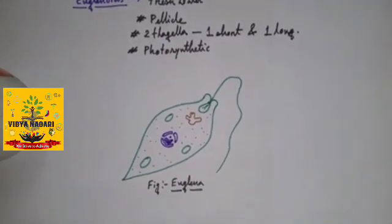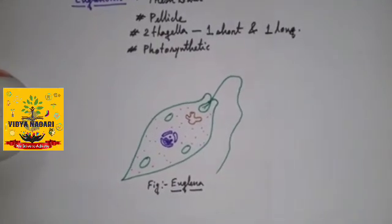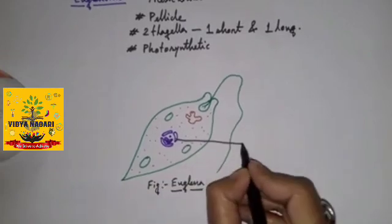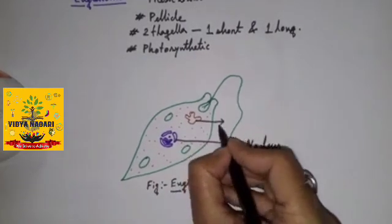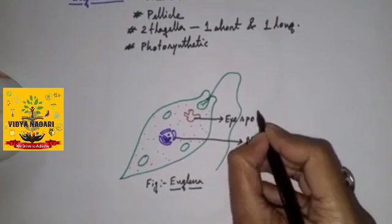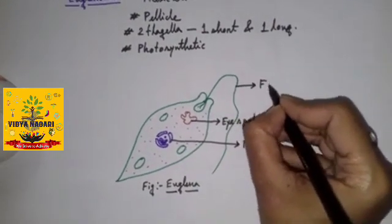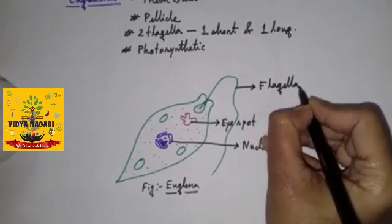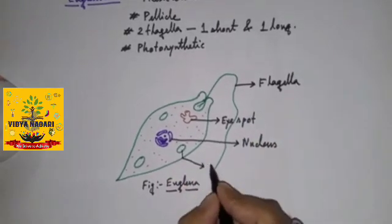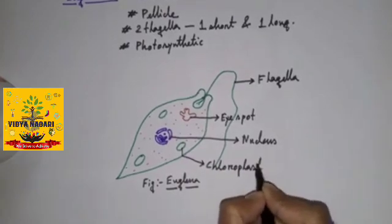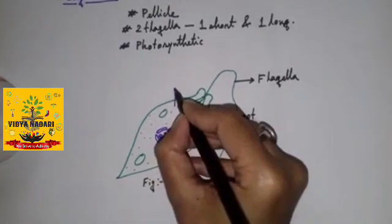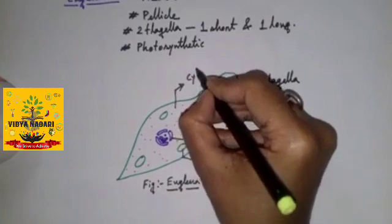Now if we consider a diagrammatic structure of Euglena, then it's their nucleus. This is eye spot. This is flagella. This is chloroplast. And this is their cytoplasm.